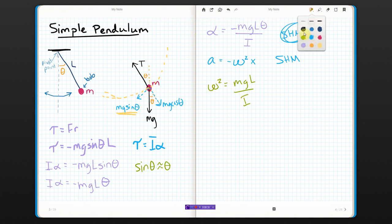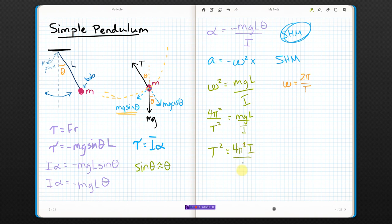We also know, from simple harmonic motion, that omega is what you get when you do 2 pi over period. So, if I put that over here, now I get 4 pi squared over T squared equals MGL over I. If I solve this for T, I get T squared equals 4 pi squared I over MGL.